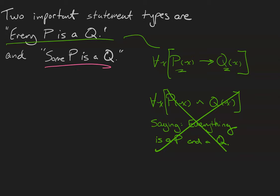When symbolizing the statement some objects with the property p will have the property q, we will have an existential quantifier. Because of the word some, that means that it's true for at least one object in our domain, not necessarily all of them. We'll have a P(x) and we'll have a Q(x). And this time, the conjunction is appropriate, because what we want to say is there is something in our universe that is both a p and a q.